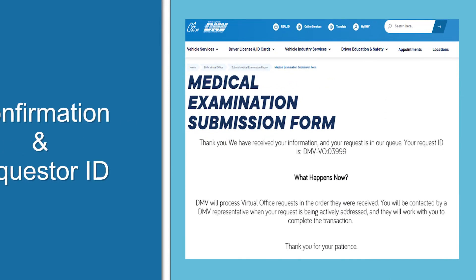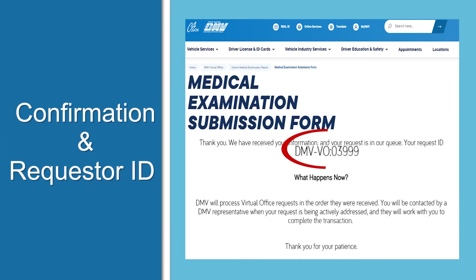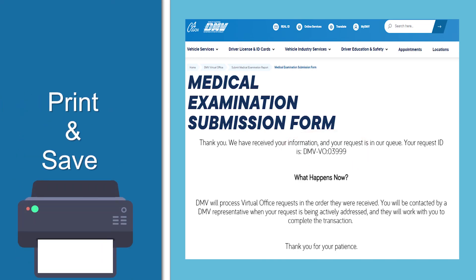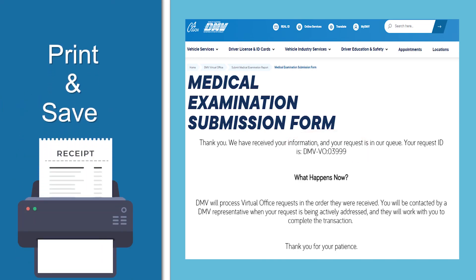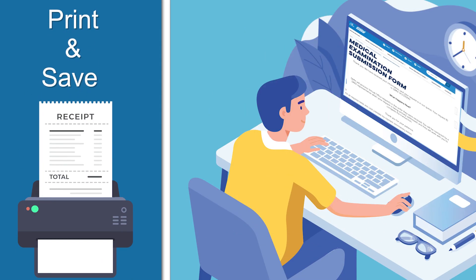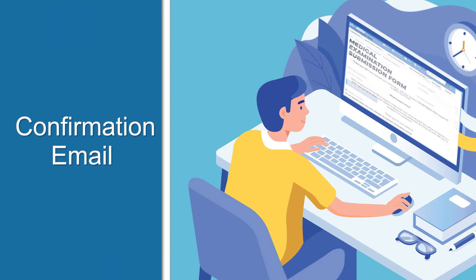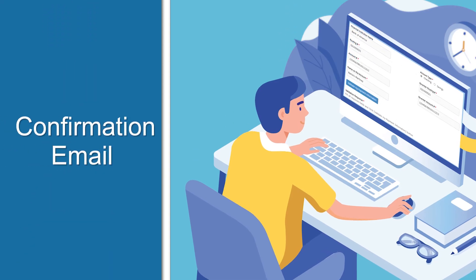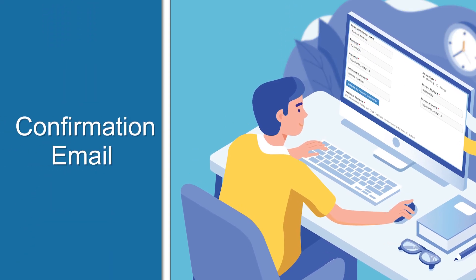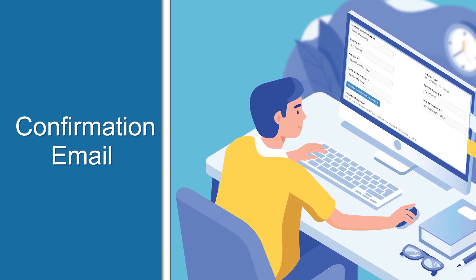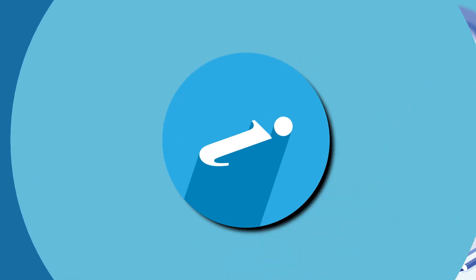You'll then receive a confirmation and a customer requester ID number. Be sure to print and save your confirmation page. Once the online VFO application is processed, the DMV will send you a confirmation email. We hope you found this step-by-step tutorial helpful.